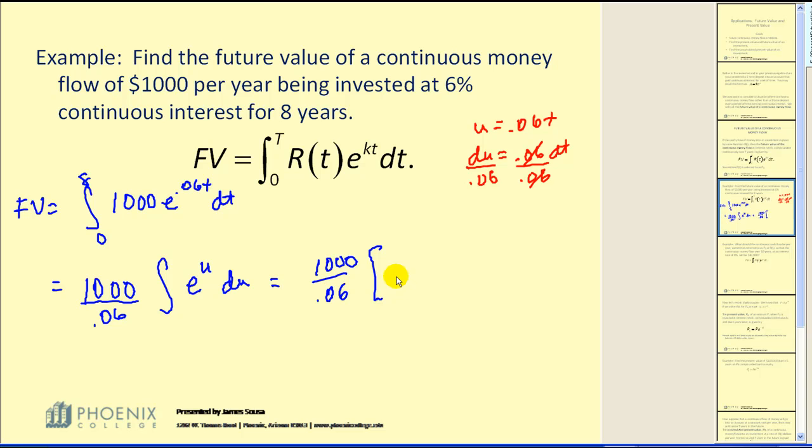The anti-derivative of e to the U is e to the U, but U is technically point zero six T. And we need to evaluate this at eight and zero.